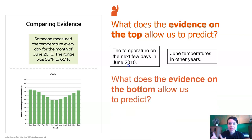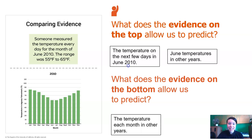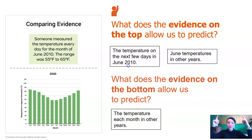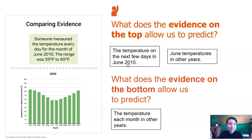What does the bottom piece of evidence allow us to predict? We could predict the temperature in every month in any other year. With the top, we could use it for just June, but with the bottom, we could use it for the entire year — predicting the expected temperature for any year in the future and any month of the year.